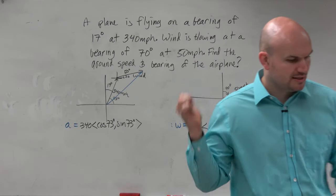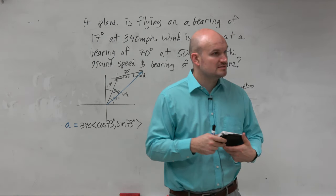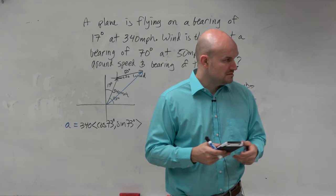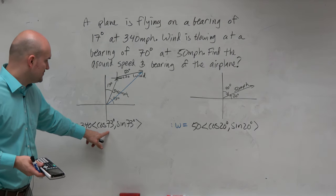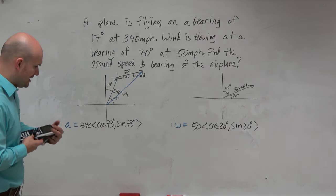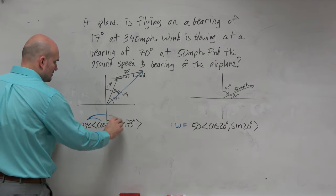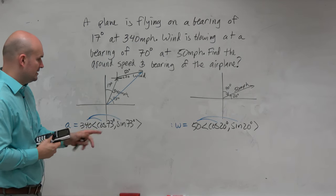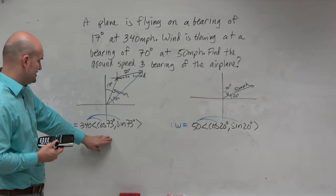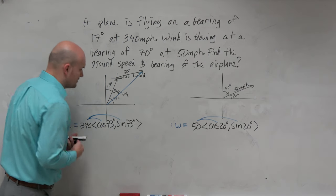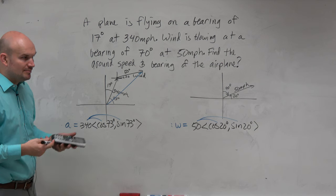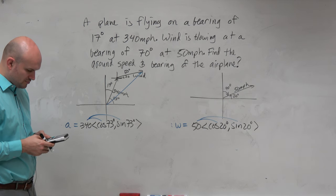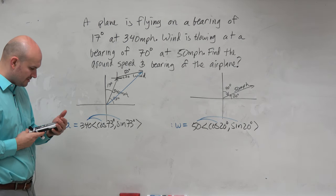Let's call A the airplane and W the wind. Could we use some math and estimate these values? We use the component form. The cosine of 73 times 340 — these are scalar components. Let's figure out what the component form would be. I'll type in 340 times the cosine of 73, and I'm getting some decimals, so I'm going to store this as alpha A.